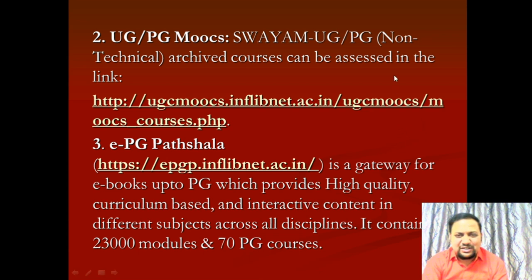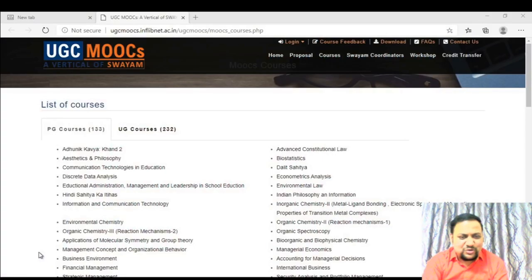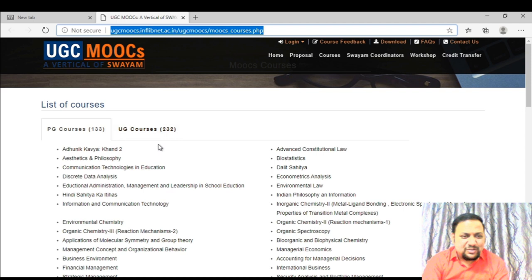Next comes the UG and PG MOOCs platform — a new initiative to facilitate learning at home due to COVID-19. They created a link through which you can access many courses. Here in the UGC MOOC browser, you can see 133 PG courses and 232 UG courses — a large number to choose from. Since creating your own learning objects is difficult, these modules are already available for you and your students as open educational resources.